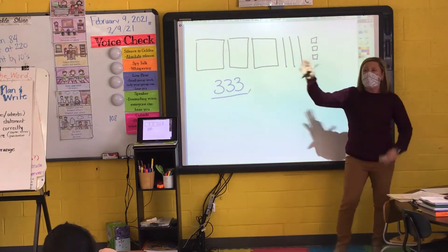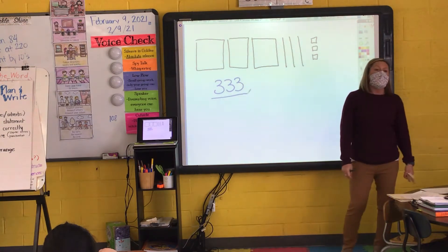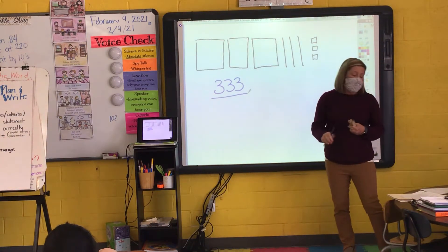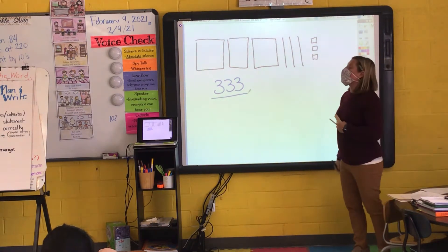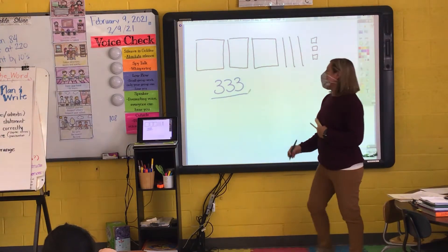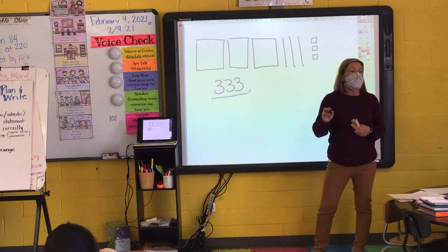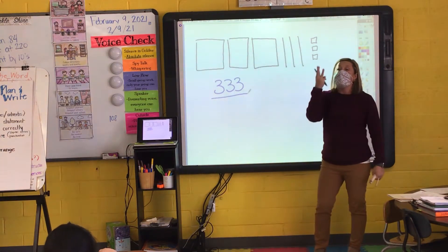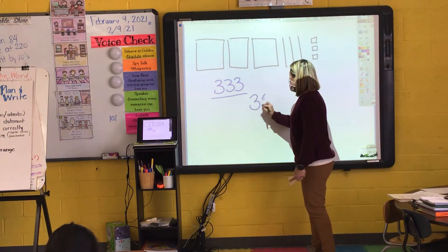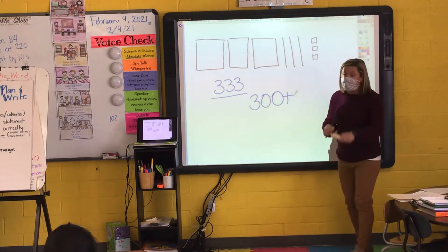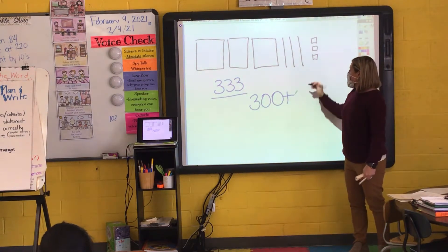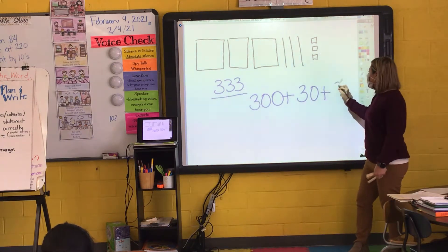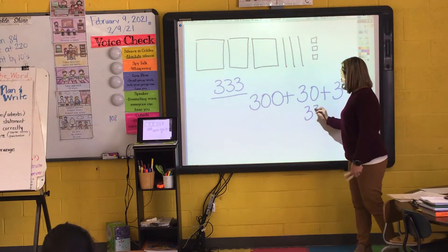I can write that number in expanded form. When I write 333 in expanded form, this is how I write it: I have 300 blocks, so I write 300 plus 30 plus 3 equals 333.